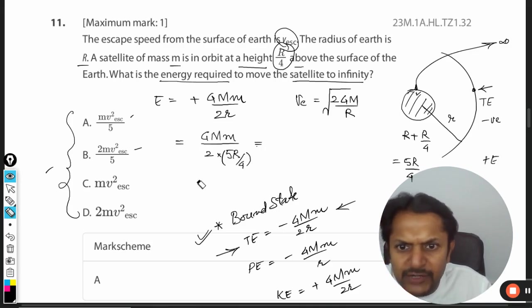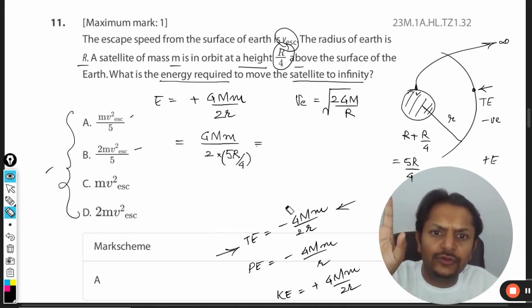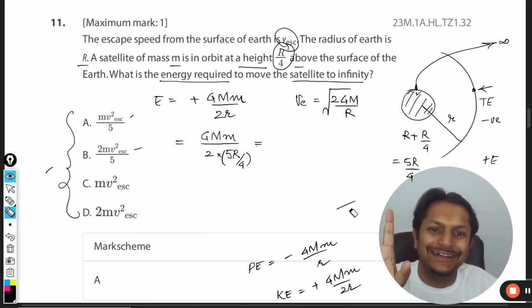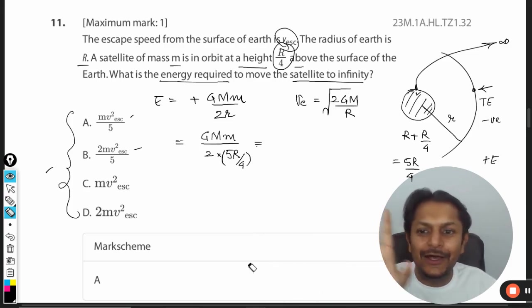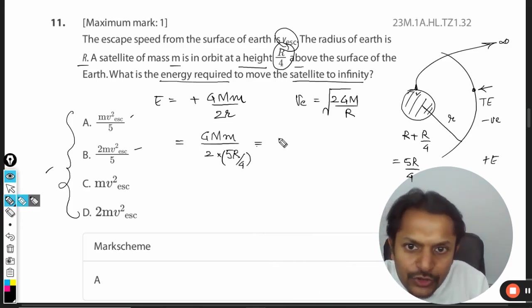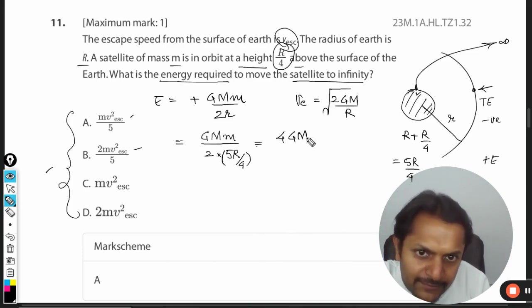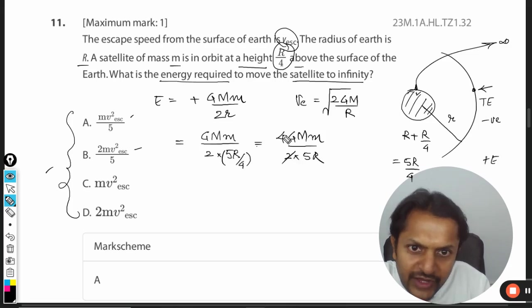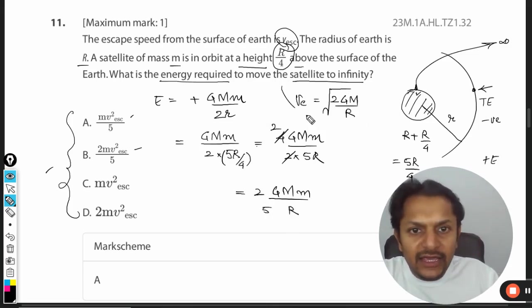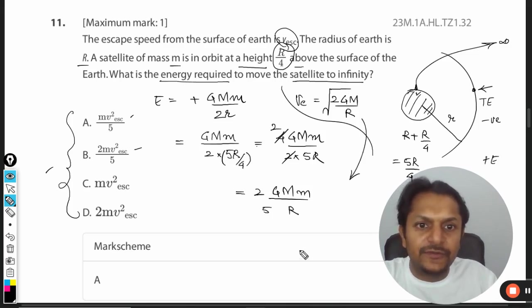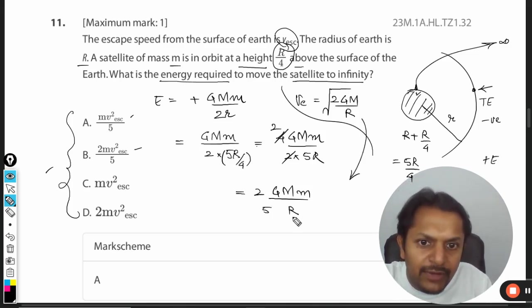The calculation is a bit tedious, but stay with me. This comes out to be 2GMm/5R. Now we'll substitute the escape speed value. We have 2GM/R here.